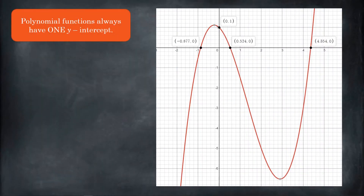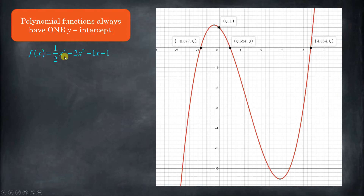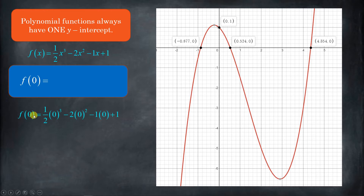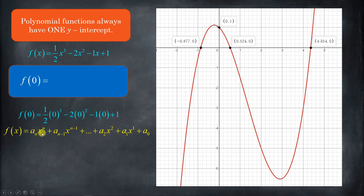So here we have this polynomial function right here. It has exactly one y-intercept, as they all will. All polynomial functions are going to have one y-intercept, and as you know, for all y-intercepts, the x-coordinate — the x-value of that coordinate — is zero. Here is the function itself: one-half x cubed minus two x squared minus x plus one. The way we find the y-intercept is we put a zero in for x, follow the order of operations, and see what's left. This is our generic polynomial function in standard form — this last value is going to be all that's left because everything else is a coefficient of x.